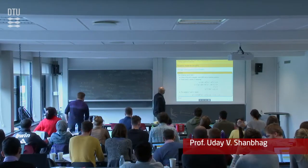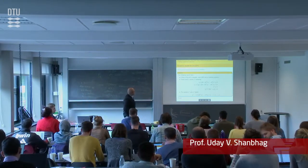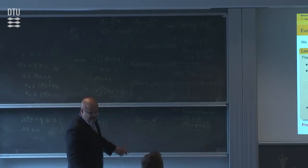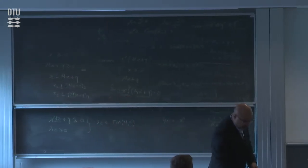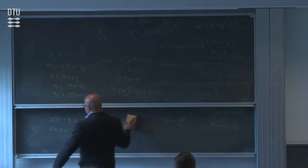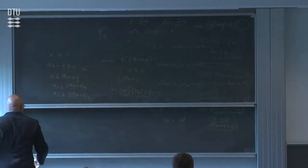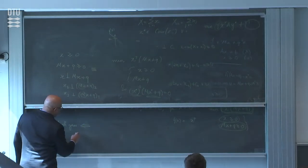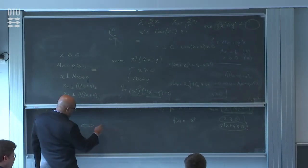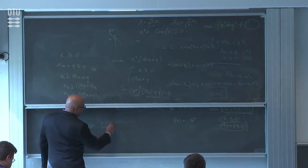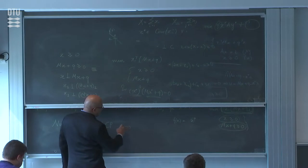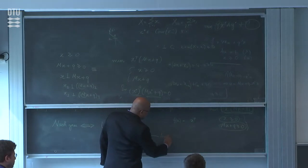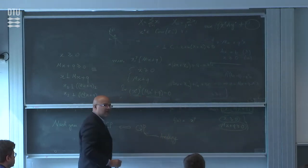We start talking about existence and a uniqueness result for LCPs. Let us remember what our game plan is from the LCP standpoint: we show that the equilibrium conditions are equivalent to an LCP, then we show this LCP can be related to some QP, and then we analyze this QP from the standpoint of existence. That's been our game plan.